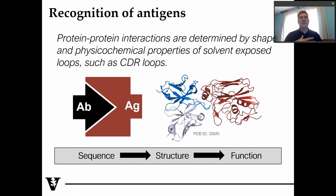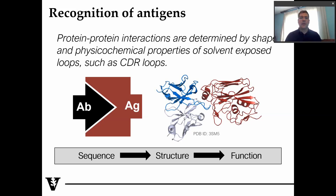One of the keys — the central dogma, if you will — of structural biology is the concept that the sequence of the protein determines the structure of the protein, and the structure of the protein is really what determines its function. So we have a sequence of a particular antibody and an antigen, and from that sequence we use computational methods to determine the structure of both the antibody and the antigen, and also the structure of the complex. And from that, we can determine the function of the antibody: does it bind to this antigen? How does it bind? What does it do?